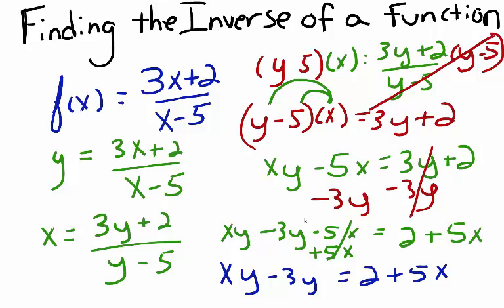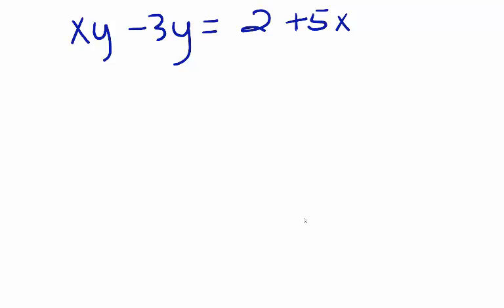I still have two terms containing y, but I can resolve that by factoring y out of the two terms. So now it will look like this: y times x minus 3, because we factored the GCF of y out of both terms, equals 2 plus 5x.